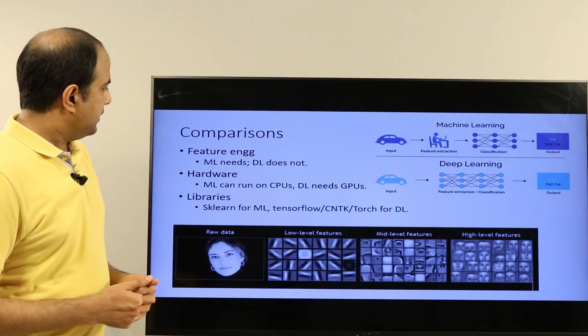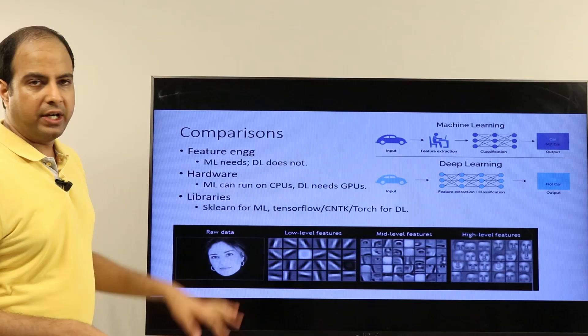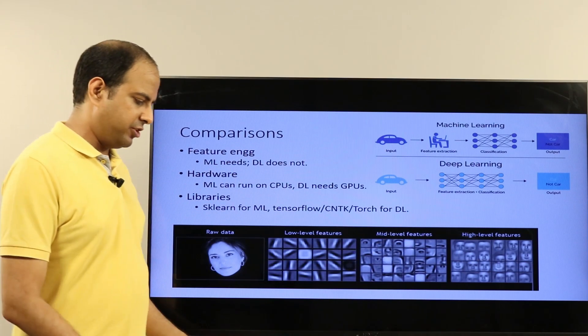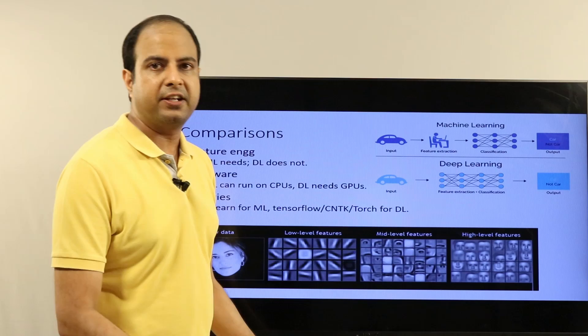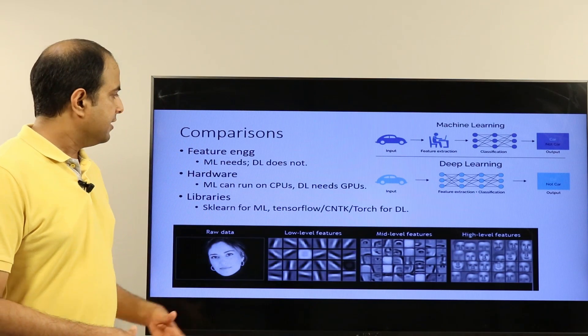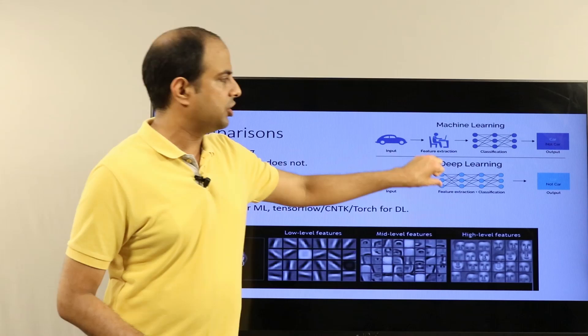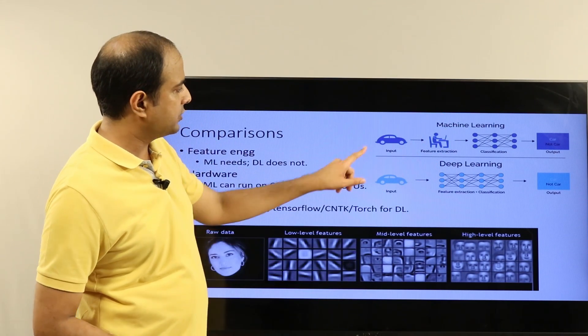Feature engineering-wise, machine learning needs a whole bunch of feature engineering. Given any domain you need to sit with the domain expert and figure out what features make sense, while deep learning does not. The distinction is shown in this picture.